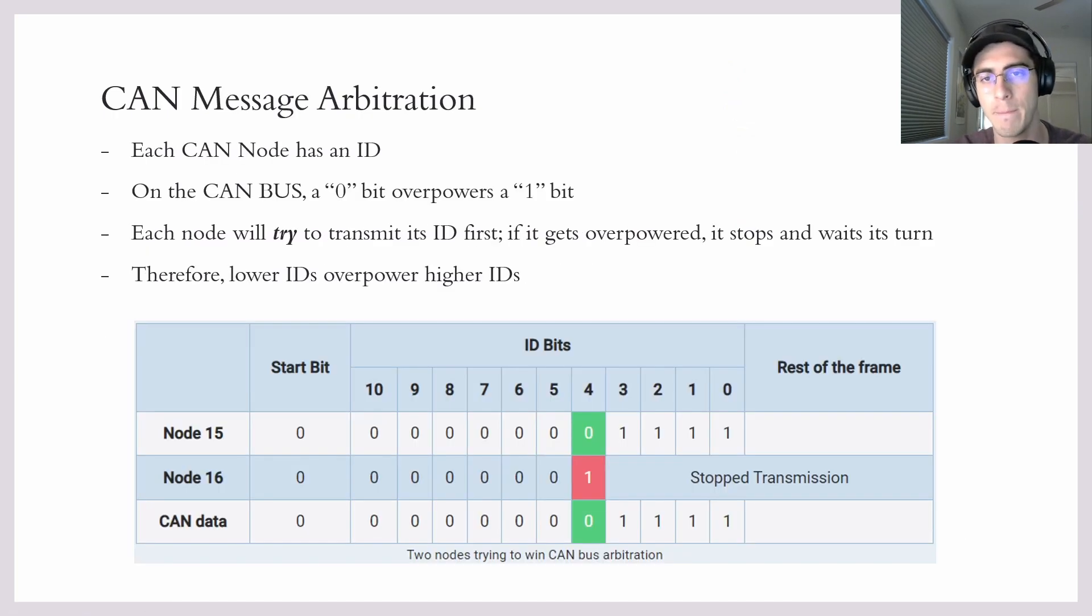Now, you might be wondering - okay, we have a bunch of nodes on a bus. How do we prevent them from talking over each other? Well, that's where we enter CAN message arbitration.